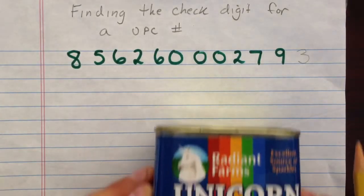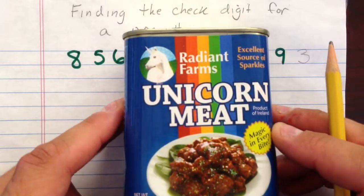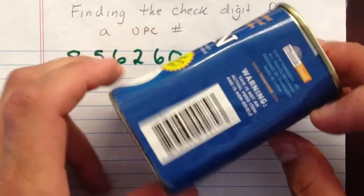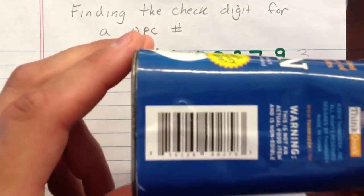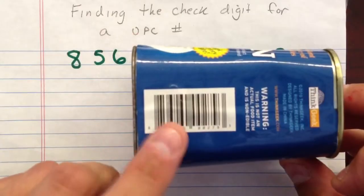This time it is from a can of unicorn meat I have on my desk. Somewhere on here is the number. It's kind of small and hard to see, but that is the number that's on there, right there for the UPC.